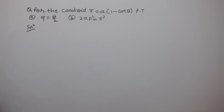We know that φ is the angle between the radius vector and the tangent. So for finding φ, first we have to find tan φ. tan φ is equal to r·dθ/dr.